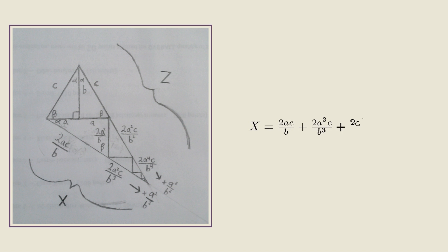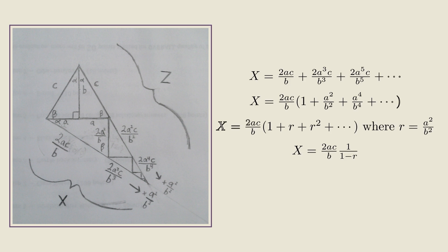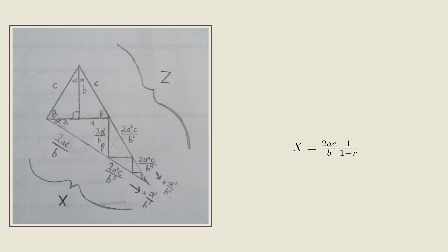So X can be calculated using that exact geometric series. As you can see on the right here, factoring out a factor of 2AC over B, and then noticing that the common ratio R is A squared over B squared, we can evaluate the length of the side X. In this expression, since R was A squared over B squared, we can go back and go on Algebra Autopilot to simplify X down to this expression.